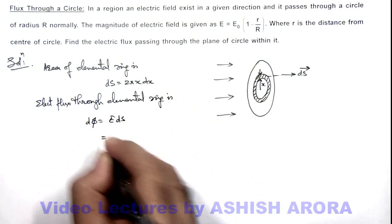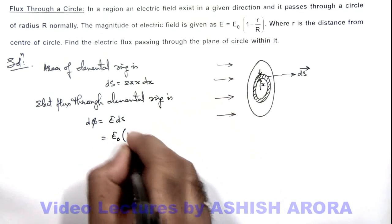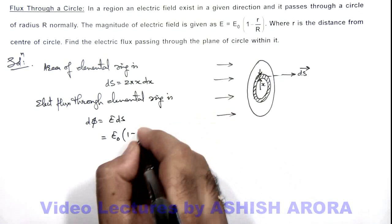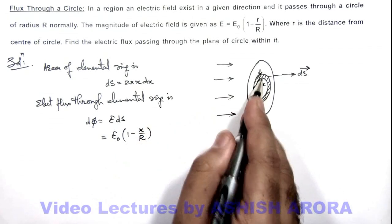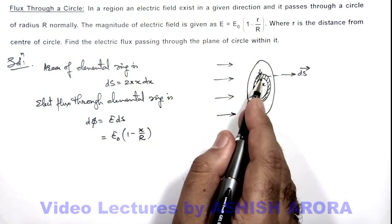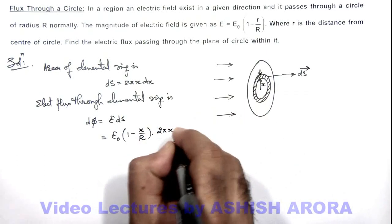If we substitute the value of E, we can write as E₀(1 - x/R), because I have taken this elemental ring at a distance x from center, and dS is 2πx dx.